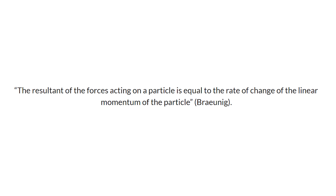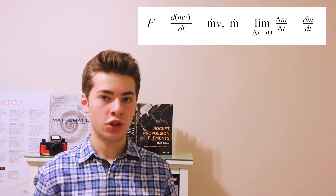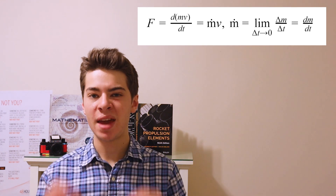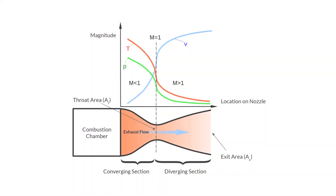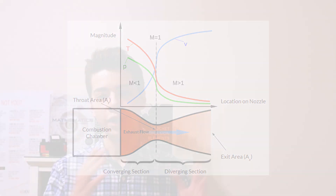As I quote: "the resultant of the forces acting on the particle is equal to the rate of change of the linear momentum of the particle." As a result, higher exit velocities result in higher thrust, which you can see in the equation right here. For the exhaust to reach high exit velocities, the nozzle is pinched, creating a converging and diverging section. The throat of the nozzle, AT, is the minimum cross-sectional area between the converging and diverging section, while the exit area, AE, is the maximum cross-sectional area at the end of the rocket. The ratio of the exit nozzle cross-sectional area and the throat nozzle's cross-sectional area is known as the expansion ratio.